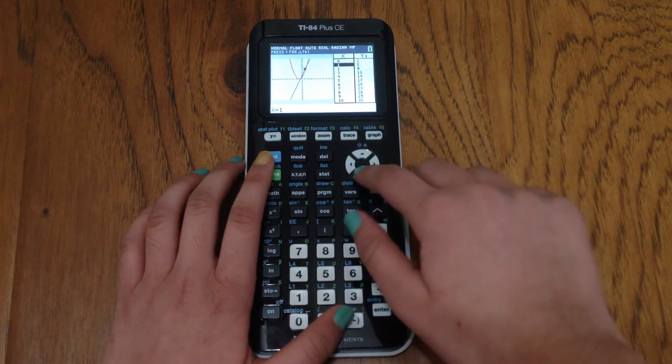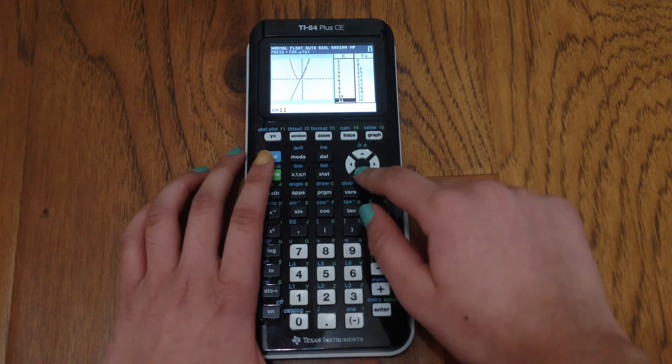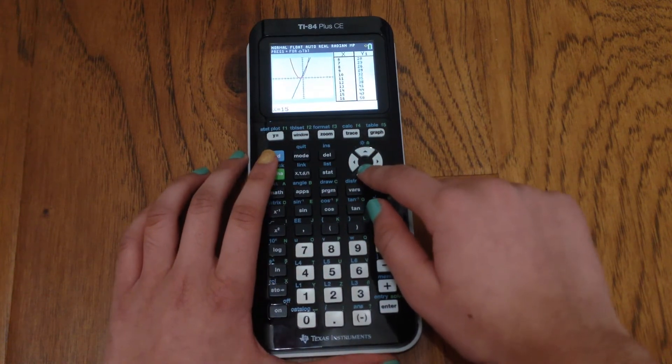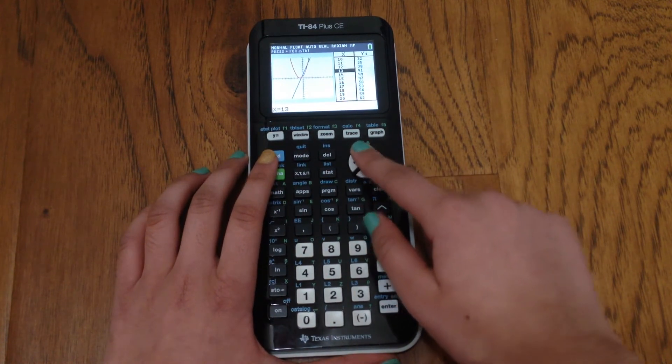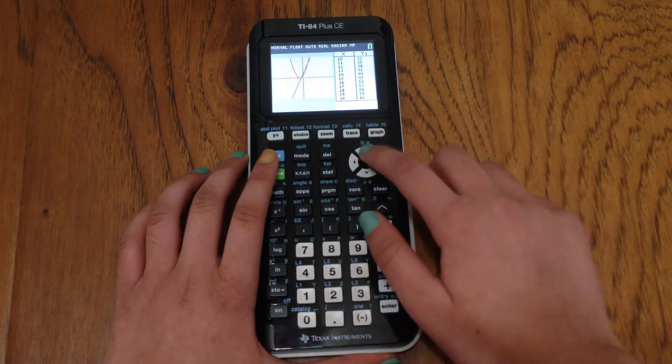To go to the table, now you can select values in your table and scroll through values on your table. And to go back to the graph tab, you just hit graph again.